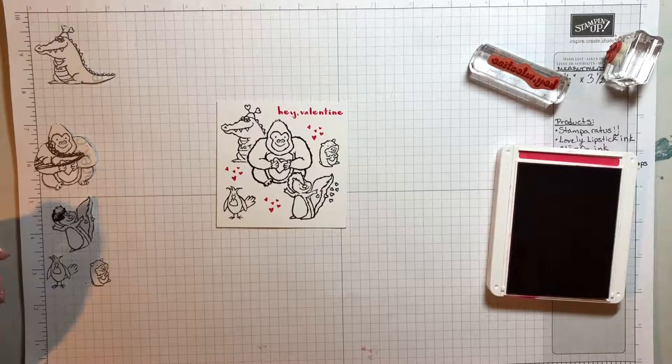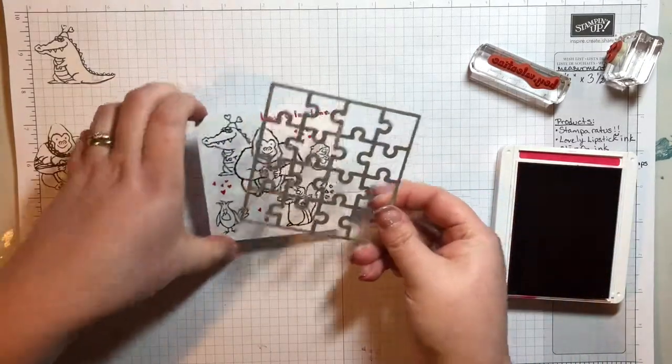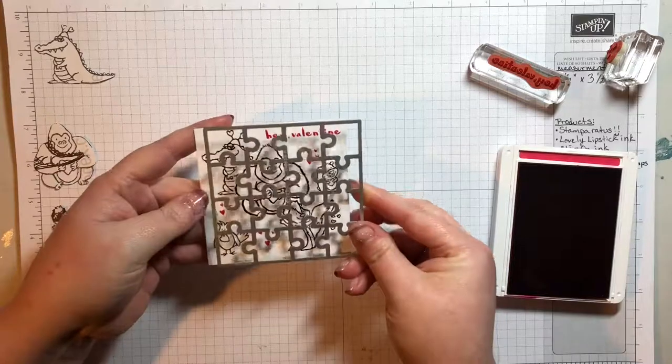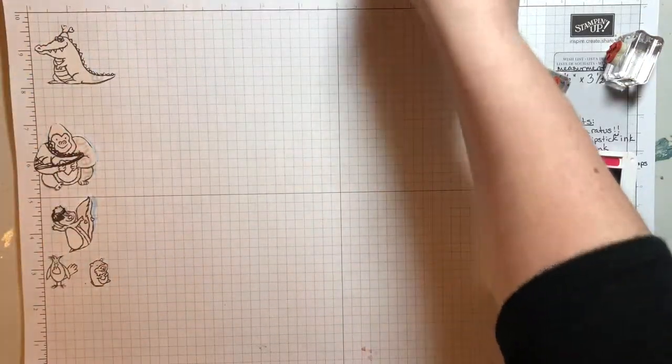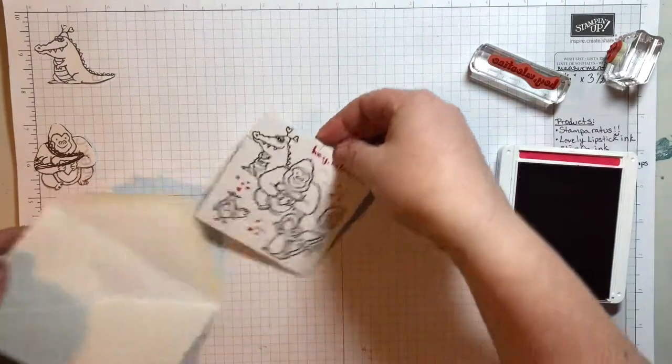Then all that's left is you bring in your big shot and your puzzle piece die and layer them up and run them through the big shot. And your completed puzzle looks something like this.